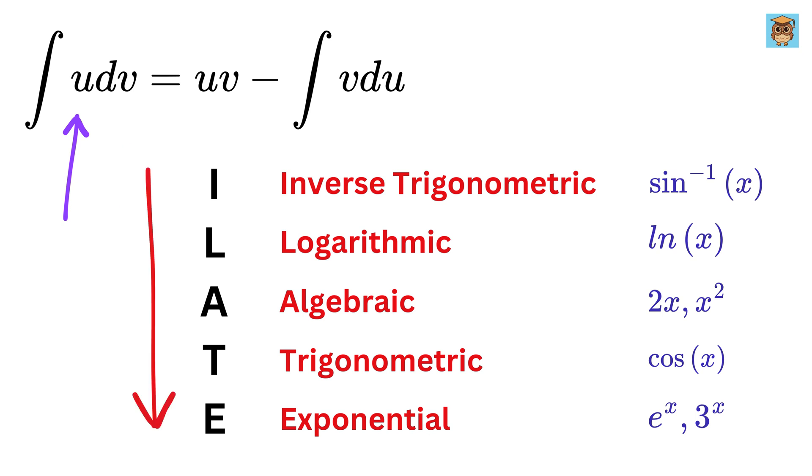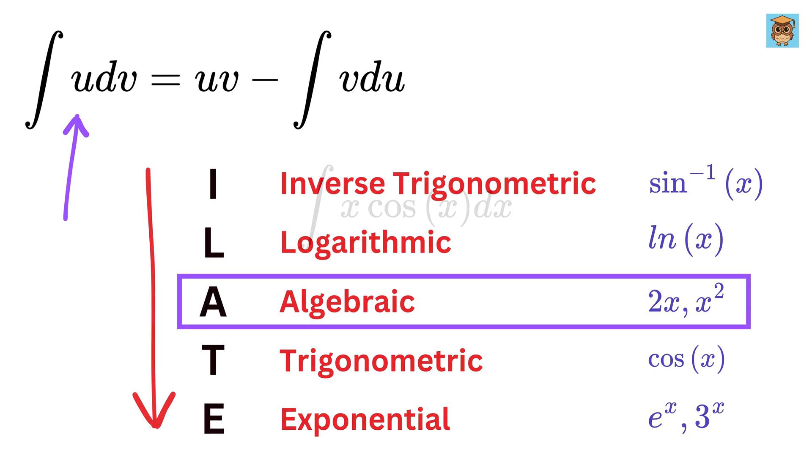We always choose u based on this order, meaning that if we have both an algebraic and a trigonometric function, we select the algebraic function as u, since it appears earlier in ILATE.